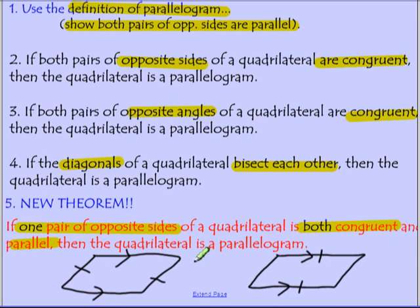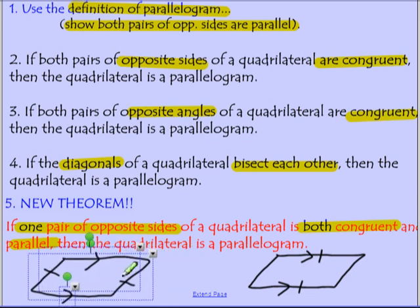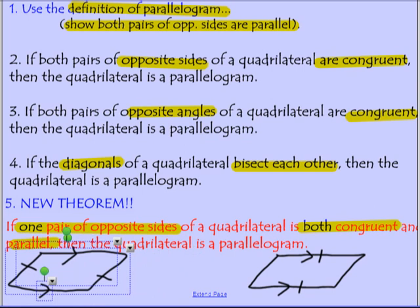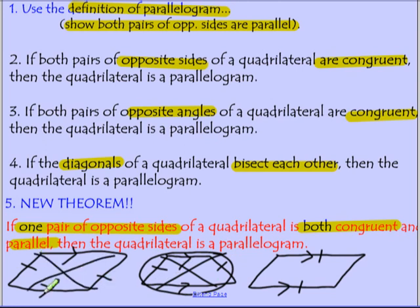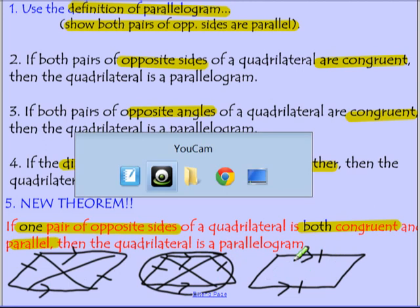And in fact, what that could look like, I'll move that over and show you what that could look like, just so you can see why this one on the left doesn't work. You could have something like that, where those two are parallel and those are congruent, but clearly that's not a parallelogram, so that wouldn't work. But in this situation over here, it does.